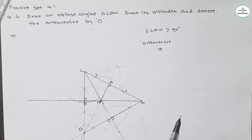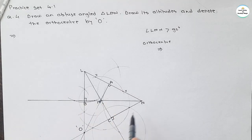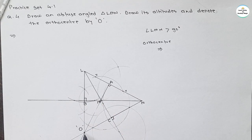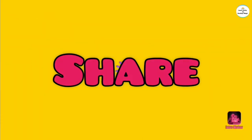If we extend all three altitudes we will get a concurrence point, and this point is called the orthocenter — the concurrence point of all altitudes of a triangle. Thus we have drawn an obtuse angle triangle, drawn altitudes from all three vertices, and found the orthocenter. Do learn, do enjoy — thank you.